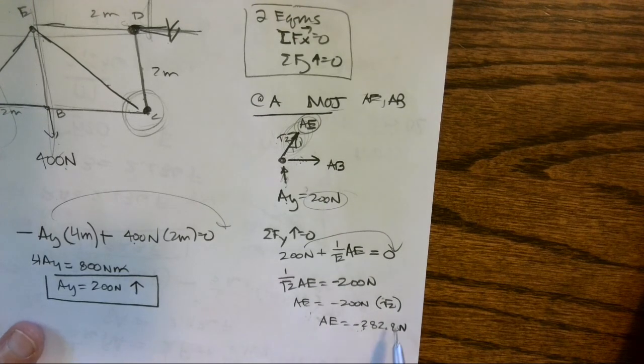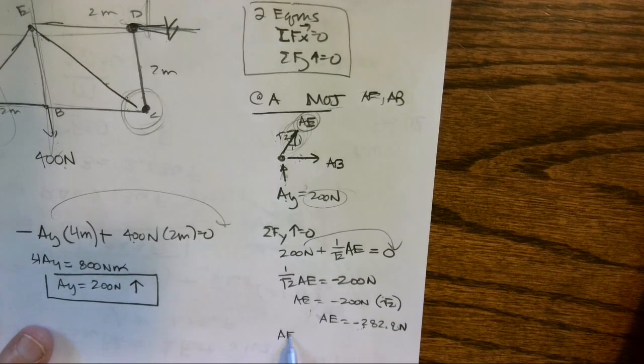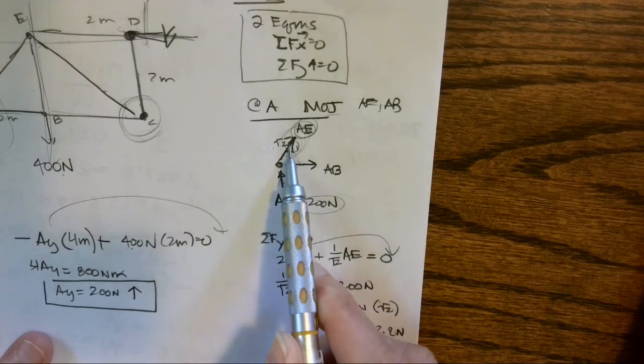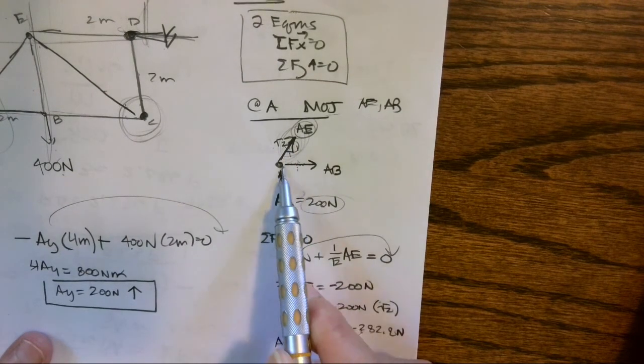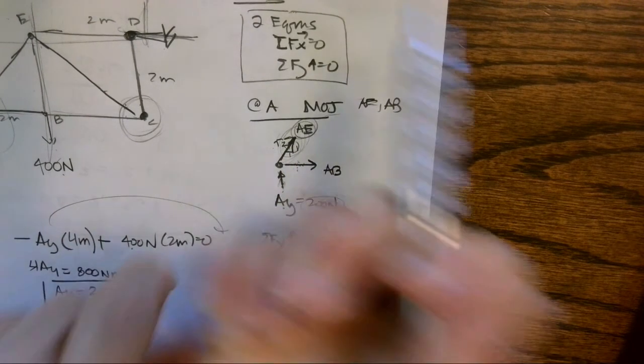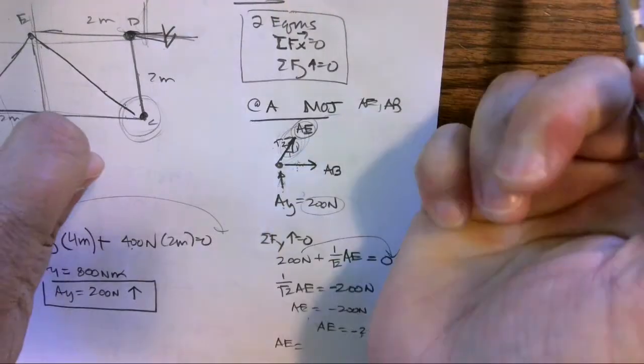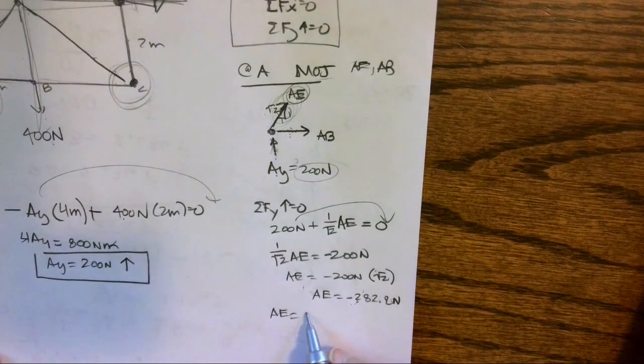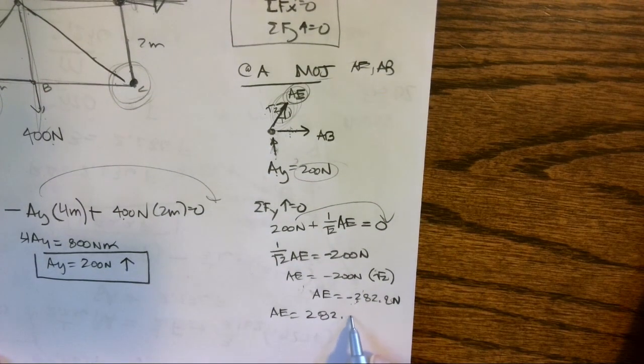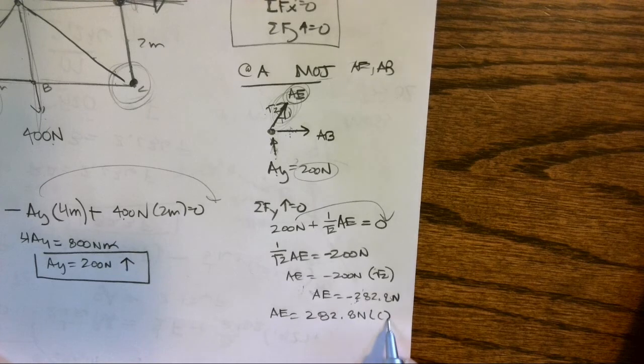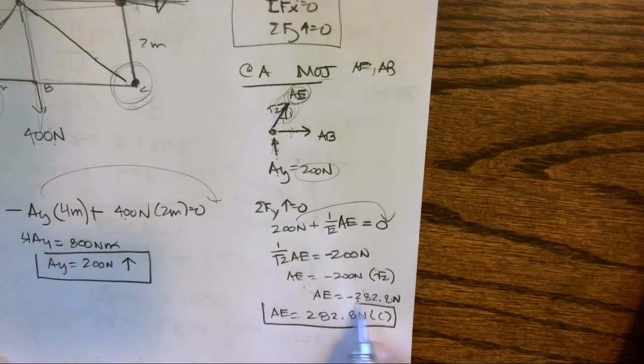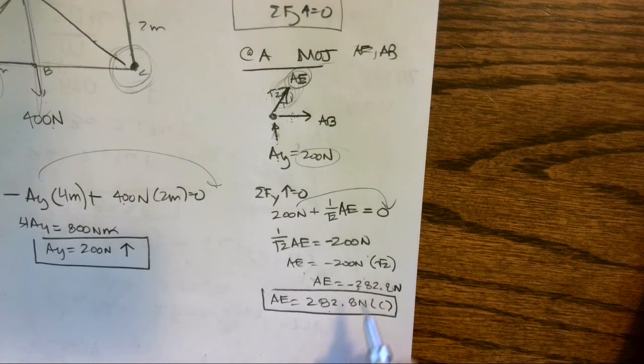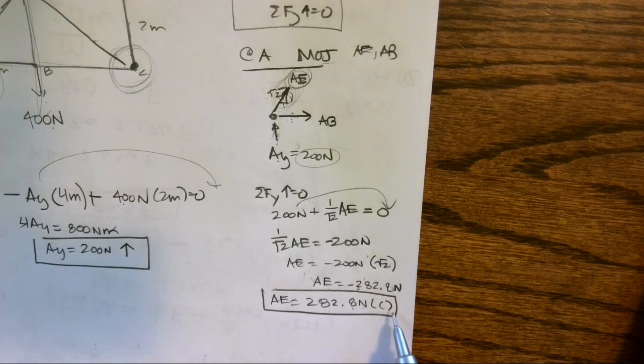Okay, the other thing I note is I got a negative, and that tells me—because I'm assuming everything is tensile in behavior, pulling away, pulling in tension—I got a negative, so I know it's really 282.8 Newtons in compression. So when I present that in my work, I need to note the magnitude, the unit, and then either tension or compression.